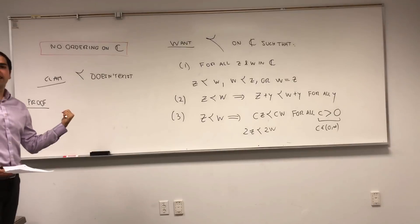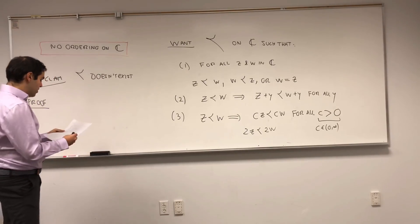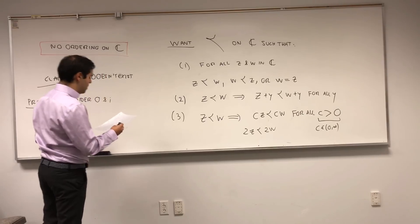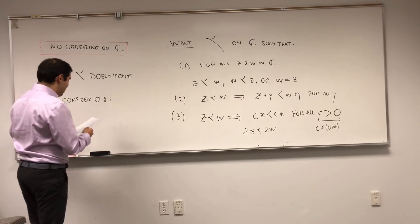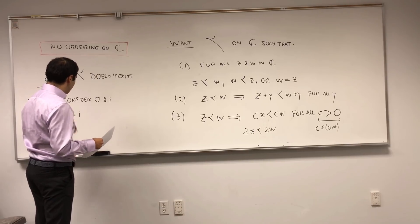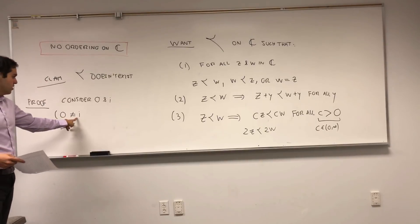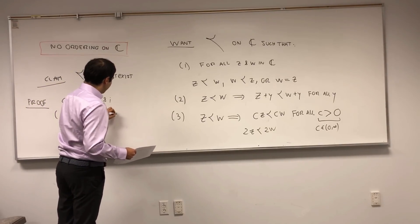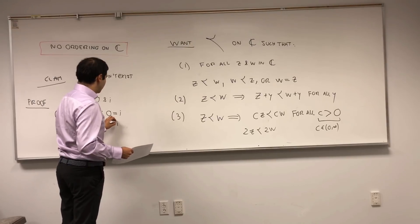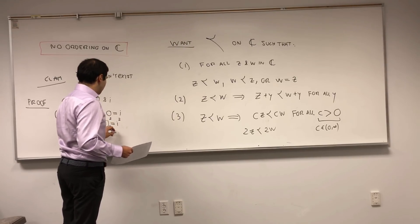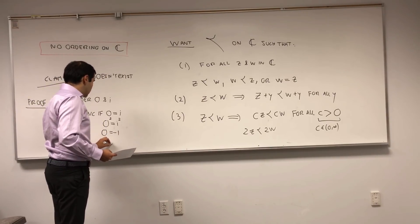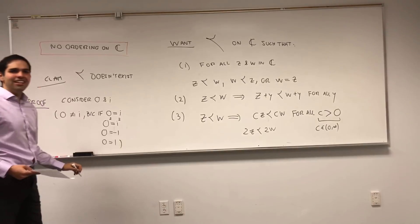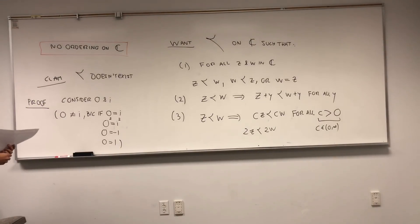Well, suppose this ordering existed. Let's compare the numbers 0 and i. Now, 0 and i are two different numbers. The reason is: suppose they were equal; then squaring both sides, if 0 equals i, then 0 squared equals i squared, so 0 equals minus 1, and multiplying by minus 1 you'd get 0 equals 1. And in another video I show that if 0 equals 1, then everything would be 0, and that's a big problem.